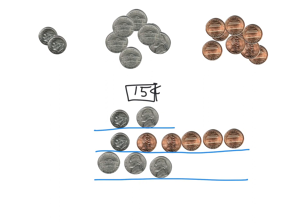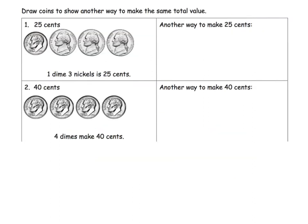Taking a look at the actual homework assignment, it says to draw coins to show another way to make that same value. It's kind of a bummer the first thing they do is tell us the answer. We could say that one dime and three nickels is 25 cents. That's 10, here's 20, plus an extra nickel is 5, so that's 25 cents.